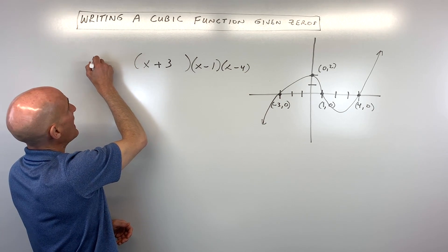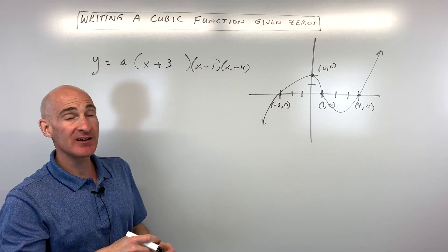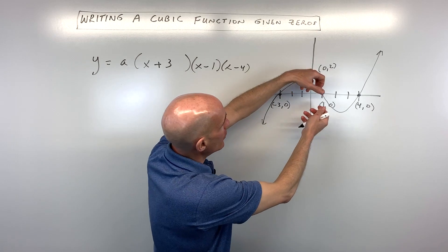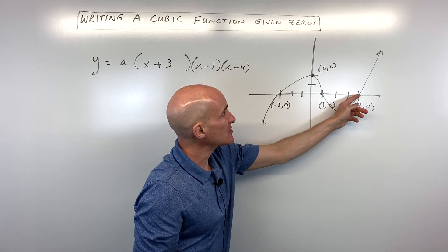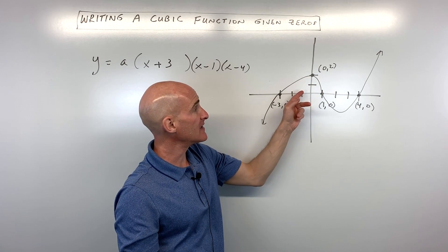Now the only other thing we need to add to this equation is a coefficient a and what the a does is it stretches the graph or compresses the graph and so we're trying to figure out what's a graph that goes through these three x-intercepts but also goes through a fourth point that's not on the x-axis.